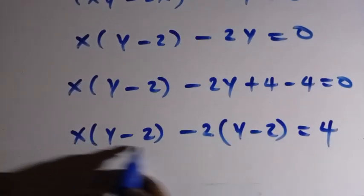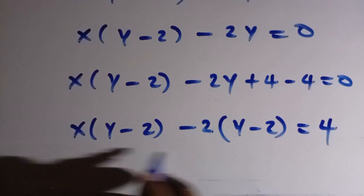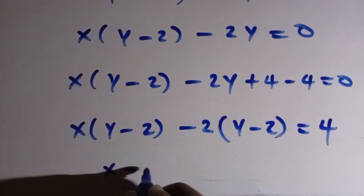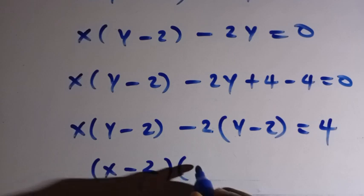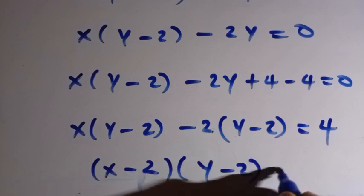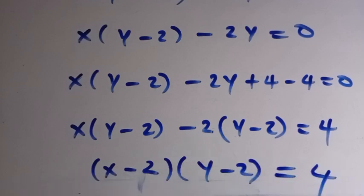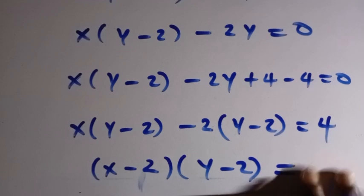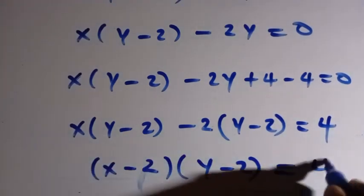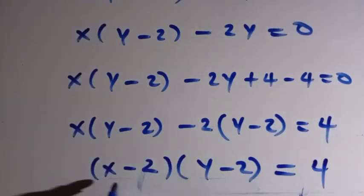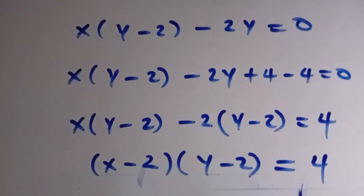So by this, we have x times y minus 2, minus 2 times y minus 2 equals 4. We can compare x minus 2 and y minus 2. So everything equals 4. Let's try and solve this to know the value of x and the value of y.